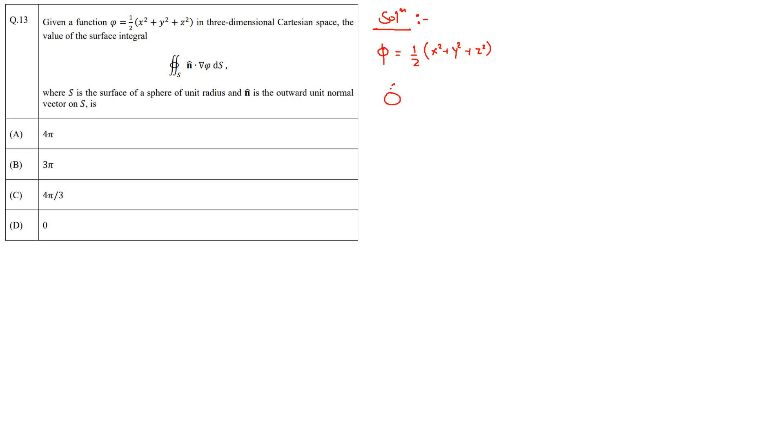And this surface integral ∫S n̂ dot grad φ dS. Now we can apply the Gauss divergence theorem and say that this surface integral will be equal to the volume integral of the divergence of the vector field given by the gradient of φ dV.